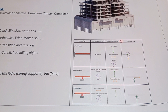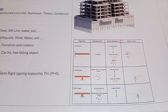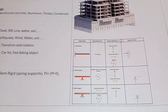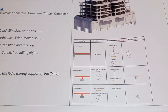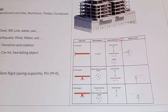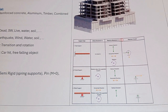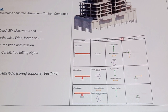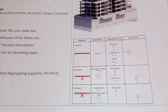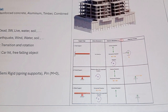A semi-rigid support is a type of spring support, which can act in rotation or translation. It is just something between fully fixed and fully released.